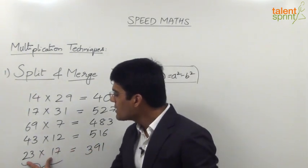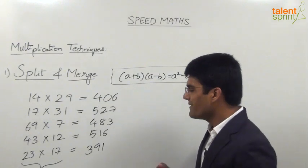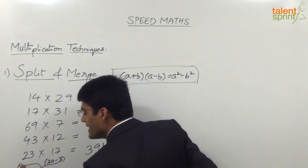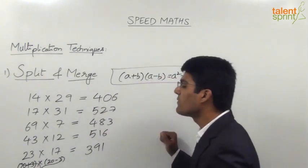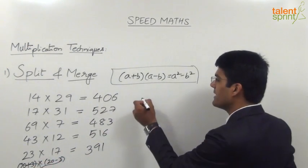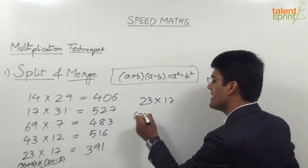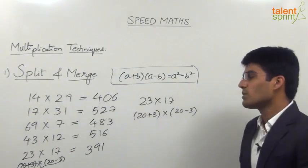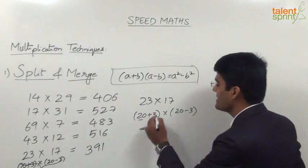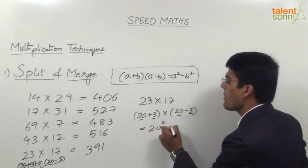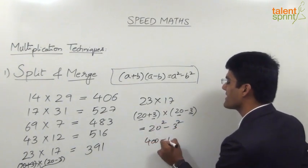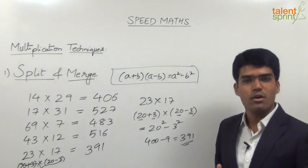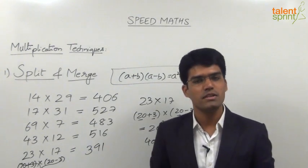For example, if you look at the question 23 into 17, what we have done is taken 17 as 20 minus 3. At the same time, if you take 23 as 20 plus 3, this question is in the form of (20 + 3)(20 - 3), which matches a plus b into a minus b. So the answer is a² - b² where a = 20 and b = 3: 20² - 3² = 400 - 9 = 391.